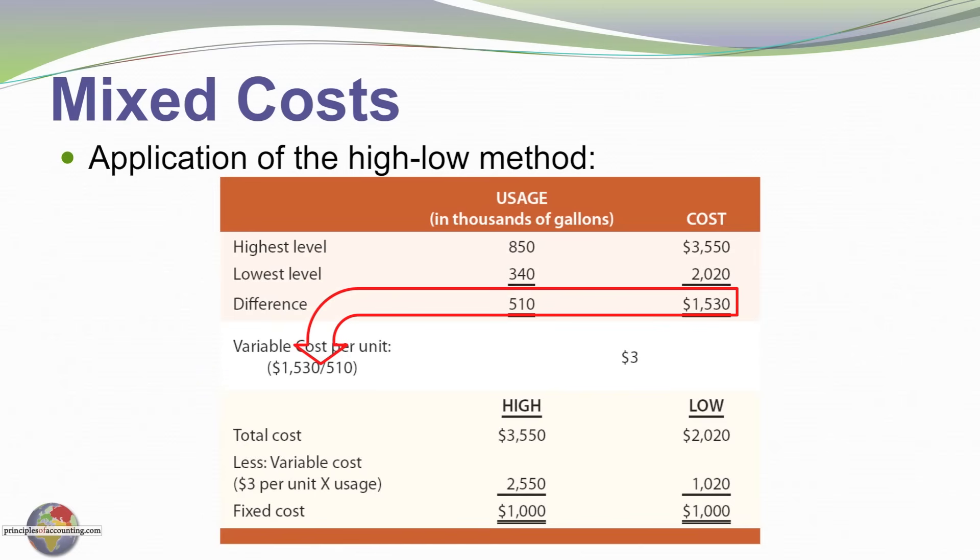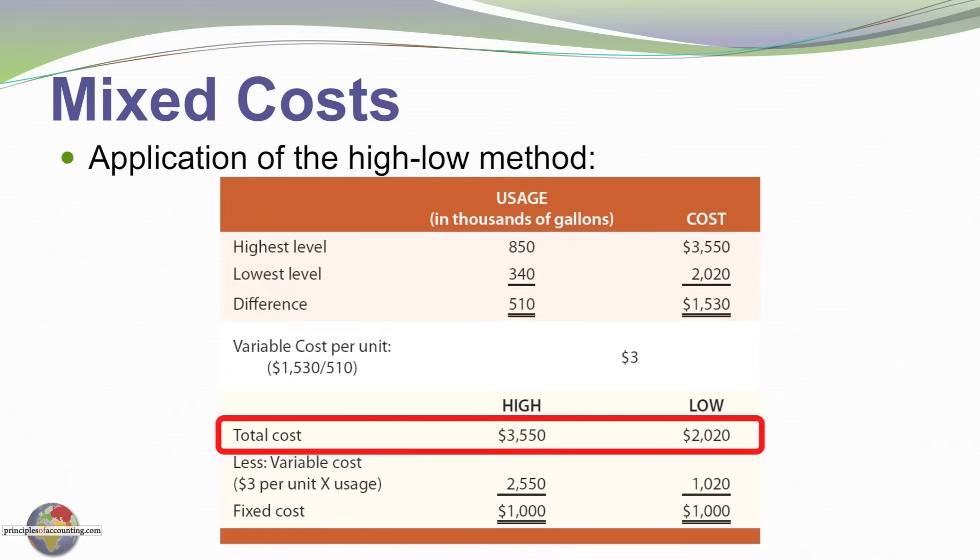Based on that, we can calculate a variable cost per unit of $3. So we're adopting an assumption that our variable cost is $3 per unit. Notice our total cost at the high level is $3,550 and at the low level $2,020. Of that, our variable cost would be $2,550. That is 850 times 3 and our low cost would be $1,020. That is 340 times 3.